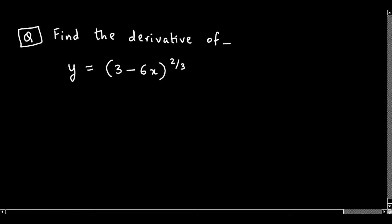Hello and welcome back. We now discuss a few examples from derivatives. The question here is: find the derivative of y equals 3 minus 6x raised to the power 2 by 3. Here we would be applying the chain rule because this is a composite function.